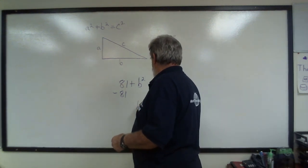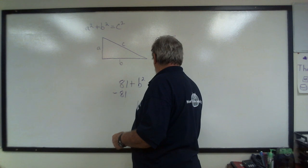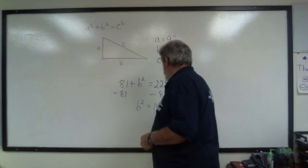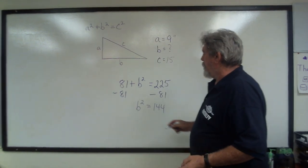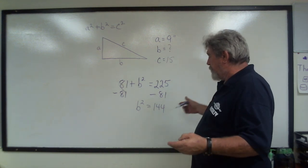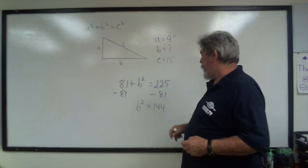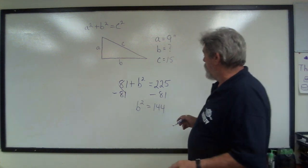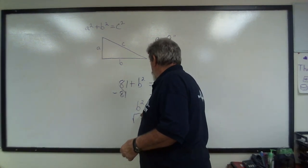So I have B squared equals 144, because these are going to cancel out. Well, now I've got a square and a square. So how do we get rid of that? We put them both under a radical.